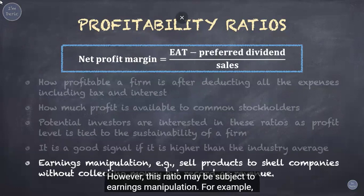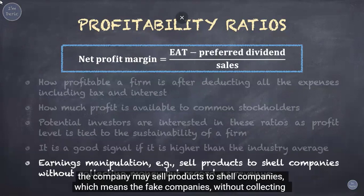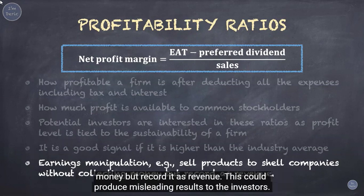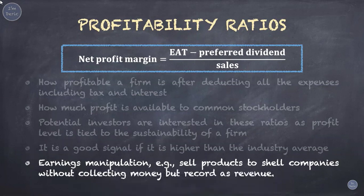For example, a company may sell products to shell companies — fake companies — without collecting money but record it as revenue. This could produce misleading results for investors.